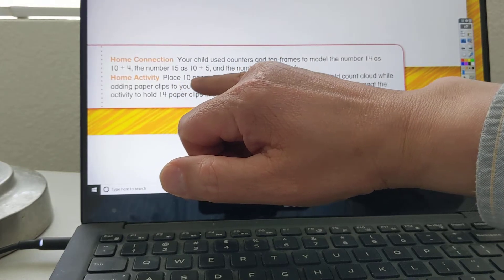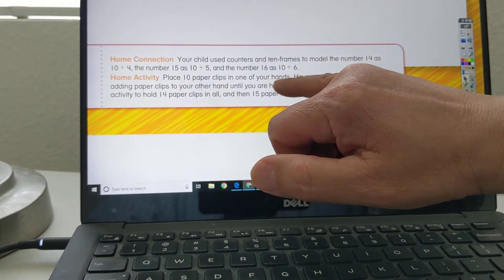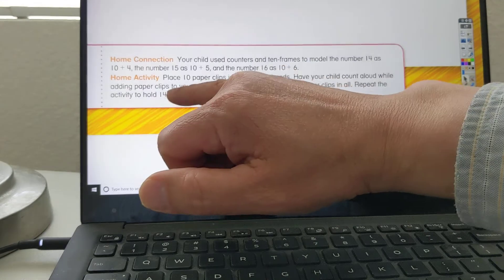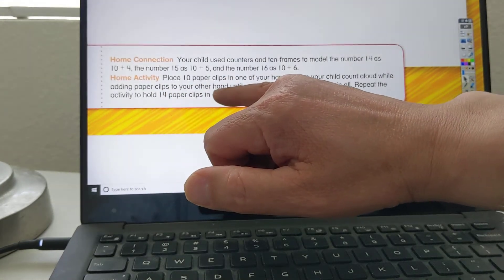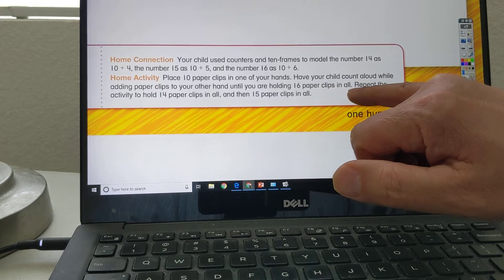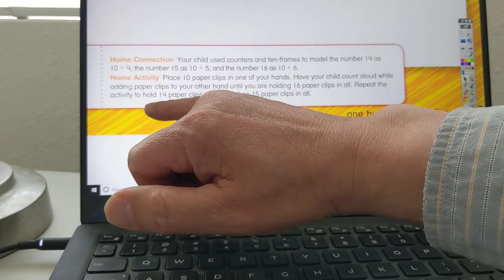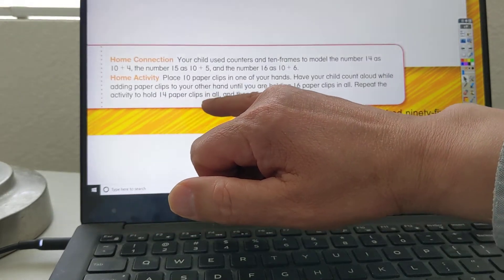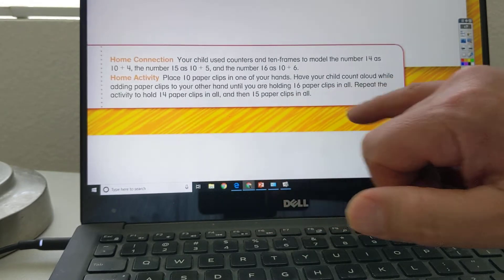Home activity. Place 10 paper clips in one of your hands. Have your child count aloud while adding paper clips to your other hand until you're holding 16 paper clips in all. Repeat the activity to hold 14 paper clips in all, and then 15 paper clips in all.